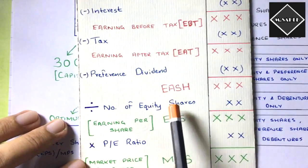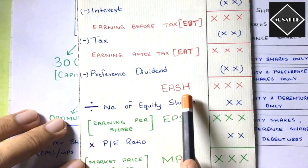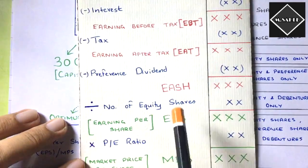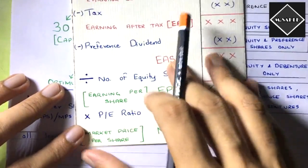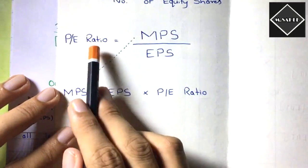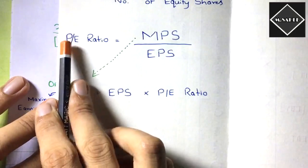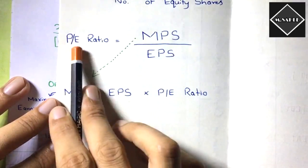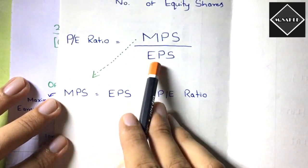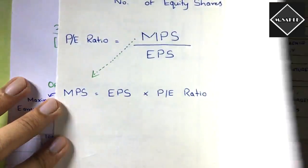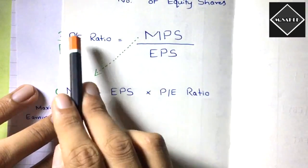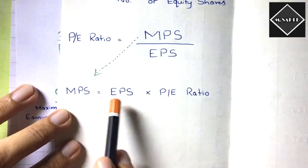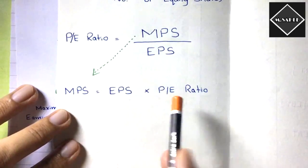Once you have EASH, divide by number of equity shares to get EPS. You can also find MPS easily. PE ratio — Price Earning Ratio — is MPS divided by EPS. So if PE ratio is given and you have EPS, just cross multiply: MPS equals EPS multiplied by PE ratio. That gives you MPS directly.